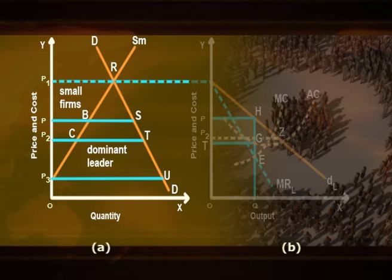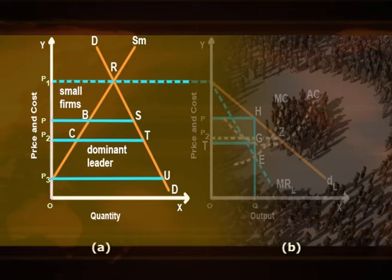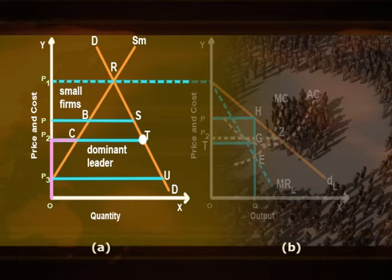In panel A, let DD represent the market demand curve and SM the total quantity sold by the small firms. The demand for the dominant firm's product is the difference between total demand DD and total supply SM by small firms. At price P1, demand for the leader firm is zero because the entire quantity P1R is supplied by the small firms. As price falls below P1, demand for the leader's product increases. At price P2, total demand is T; small firms supply P2C while the leader supplies the remaining quantity CT. At price P3 and below, the entire quantity is supplied by the leader firm, as small firms supply zero. Thus, below price P3, the entire market demand coincides with the leader's demand curve.